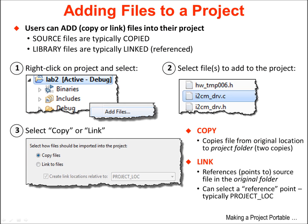When you add files to your project, you can either copy or link them. Source files are typically copied, while library files are typically linked or referenced. To add a file to your project, click on the project name and select Add Files. You can then select the file or files you want to add. Finally, select copy or link to decide how the files will be imported. If you select copy, this will copy the file from its original location into the project folder, meaning there will be two copies. If you select link, this will reference or point to the source file in the original folder. You can also select a reference point, typically where the project is located.